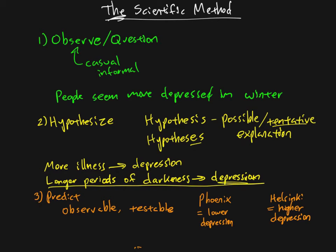There are other ways we could test this that might be better. If we have the time and money, we might go into a dormitory and install brighter light bulbs on one floor and darker light bulbs on another. We would then predict that students on the floor with brighter light bulbs would be less depressed.